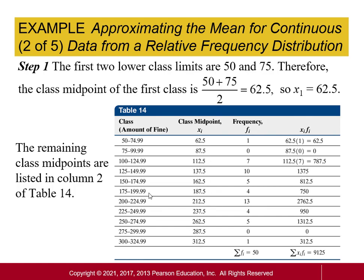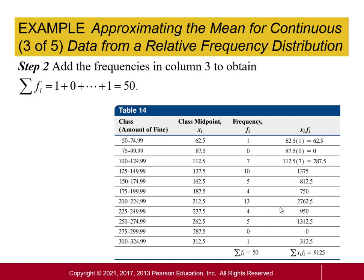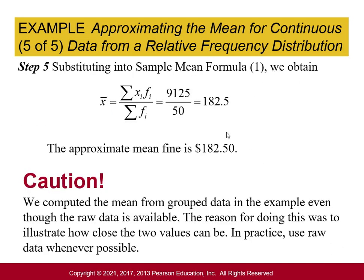Once we have the midpoints for each class, we multiply each midpoint by its corresponding frequency, sum all those products, then divide by the sum of all frequencies. That gives us the mean for the dataset where the data was grouped rather than raw. If the data is not in classes, you would just use the actual value as x instead of the midpoint.